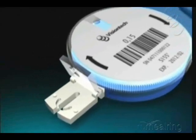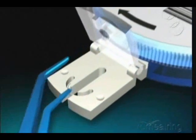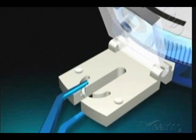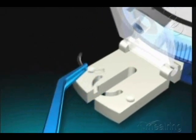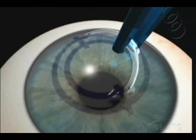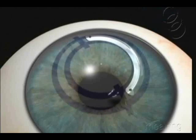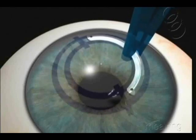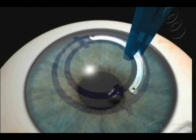Remove the corneal ring from its case using a modified McPherson forceps. Leave the ring on the cornea, observing that its steepest side is put upward. Hold the segment with the modified McPherson forceps at its middle portion.